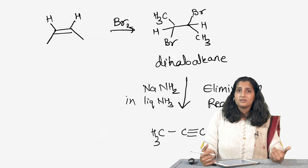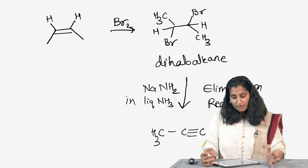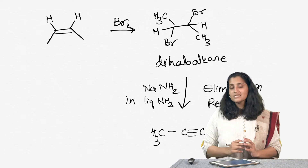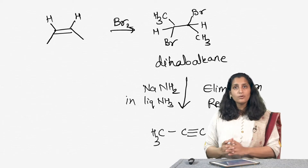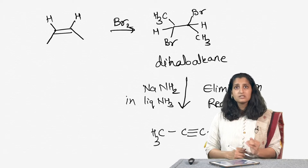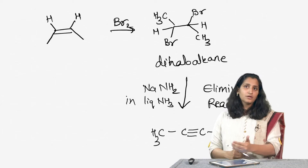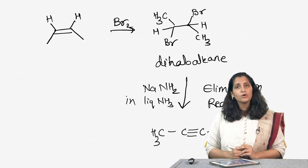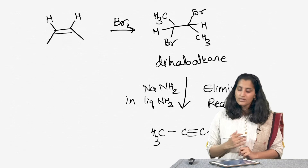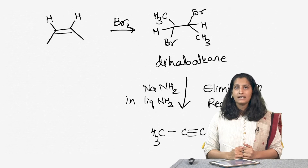This is an elimination reaction and we will look at the mechanism later. But for now, I want you to know this reaction — how to go from an alkene to an alkyne by reacting it first with Br2 or Cl2 to give the dihaloalkane, and later reacting it with a really strong base to give the alkyne.